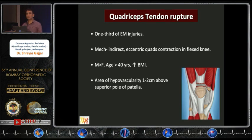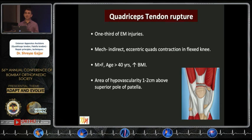Quadriceps tendon ruptures account for one third of extensor mechanism injuries. The mechanism is usually indirect, following eccentric quadriceps contraction in a flexed knee. It is predominantly a male-dominant injury, generally seen in patients over 40 years of age who are obese. The area of rupture is generally one to two centimeters above the superior pole of the patella, which is an area of hypovascularity.